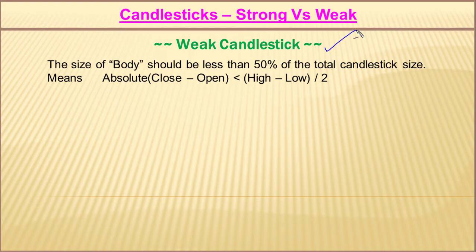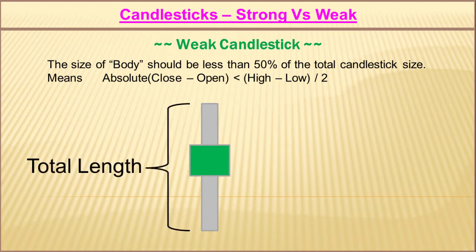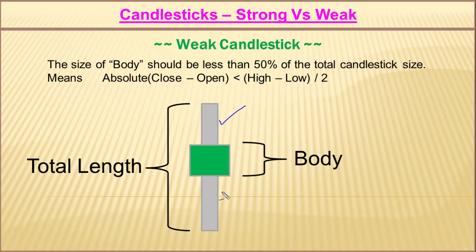Now, what is a weak candlestick? A weak candlestick is one whose body is less than 50% of the total candlestick size. The total length is the difference between the high and low, and the body is the difference between the open and close price. You can clearly see that the wicks are quite large and the body is quite small — less than 50% of the total candlestick length. These types of candlesticks are called weak candlesticks.